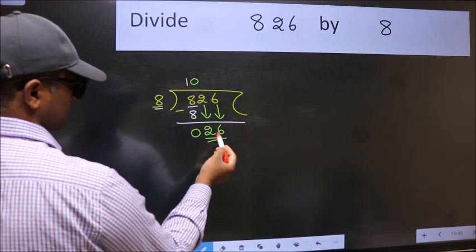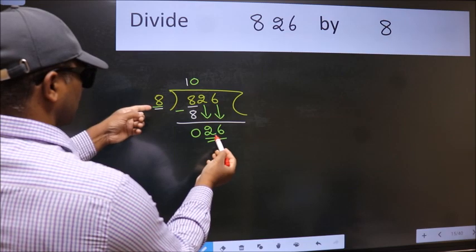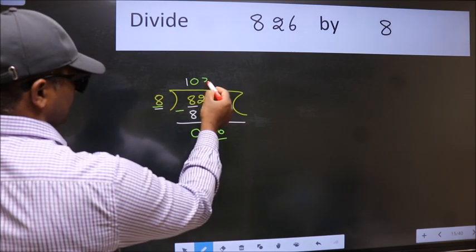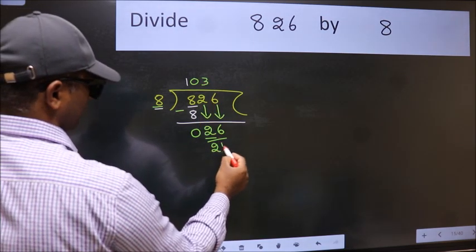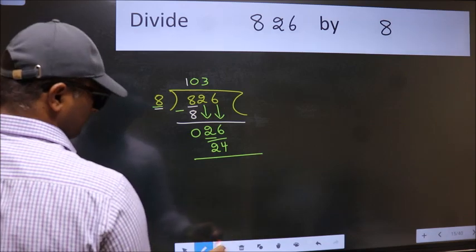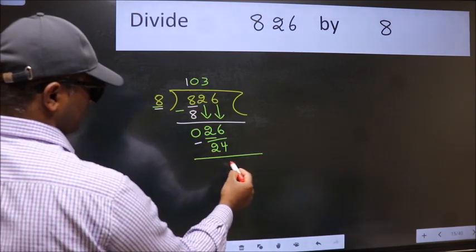So 26. A number close to 26 in the 8 table is 8 threes, 24. Now we subtract. We get 2.